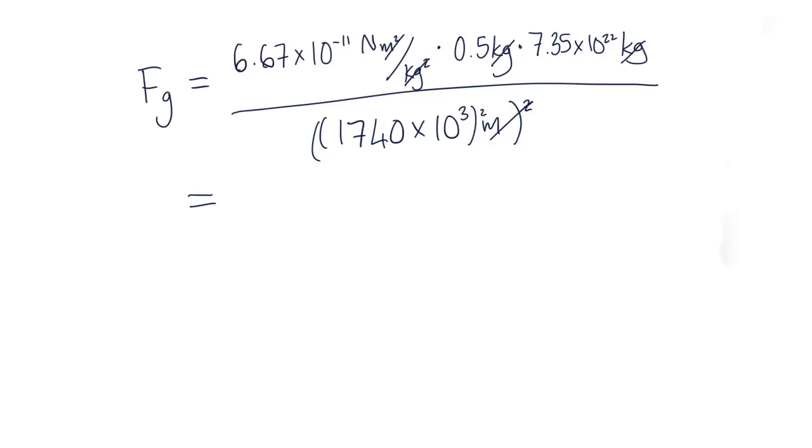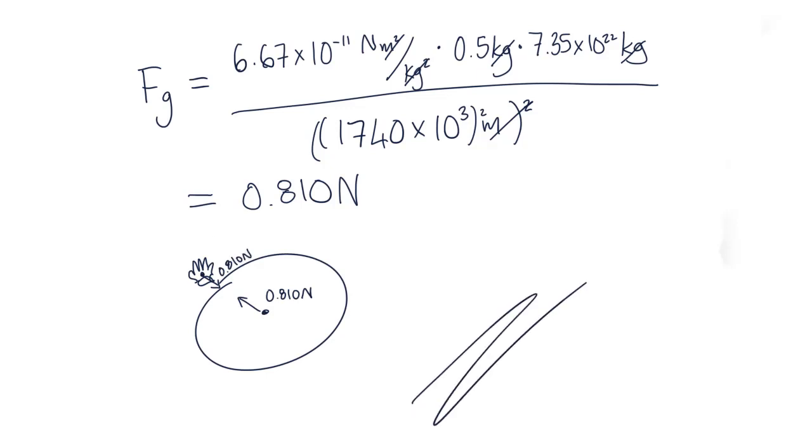If we plug in the values of our variables, we get an answer of 0.810 newtons to three significant figures. So we know between the moon and the glove, there is 810 millinewtons of gravitational force.